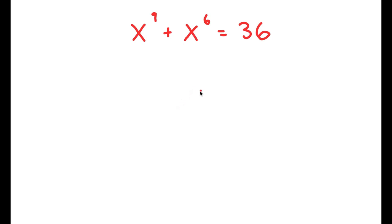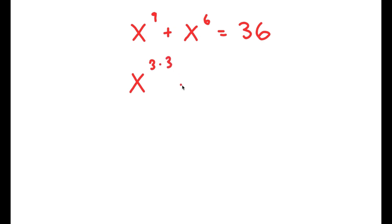In this problem, I have x to the power of 9 plus x to the power of 6 is equal to 36. To solve this, I'm going to first start by rewriting this as x to the power of 3 times 3 plus x to the power of 3 times 2 is equal to 36.